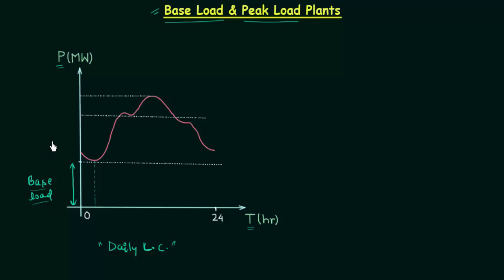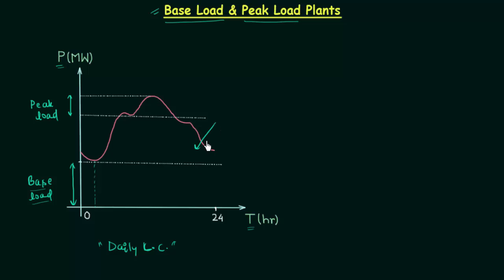The peak load is the maximum load we need to supply in 24 hours. You can see the peak here, and corresponding to this peak we have the peak load. In between we have the intermediate cycling load.